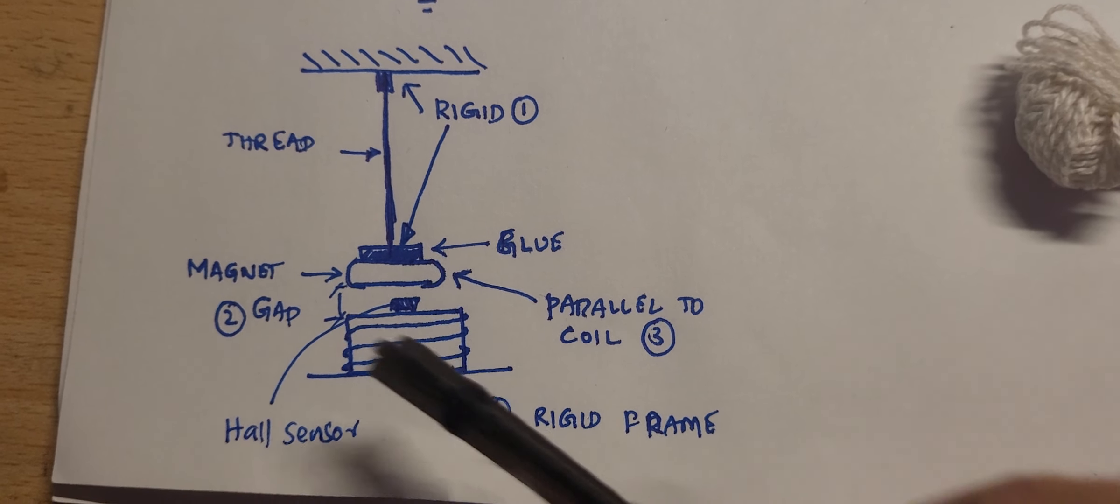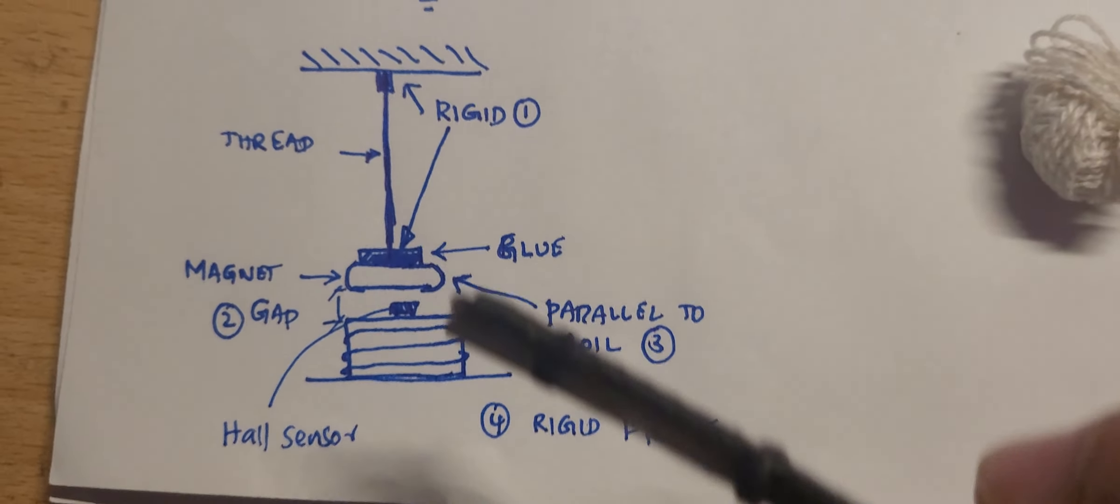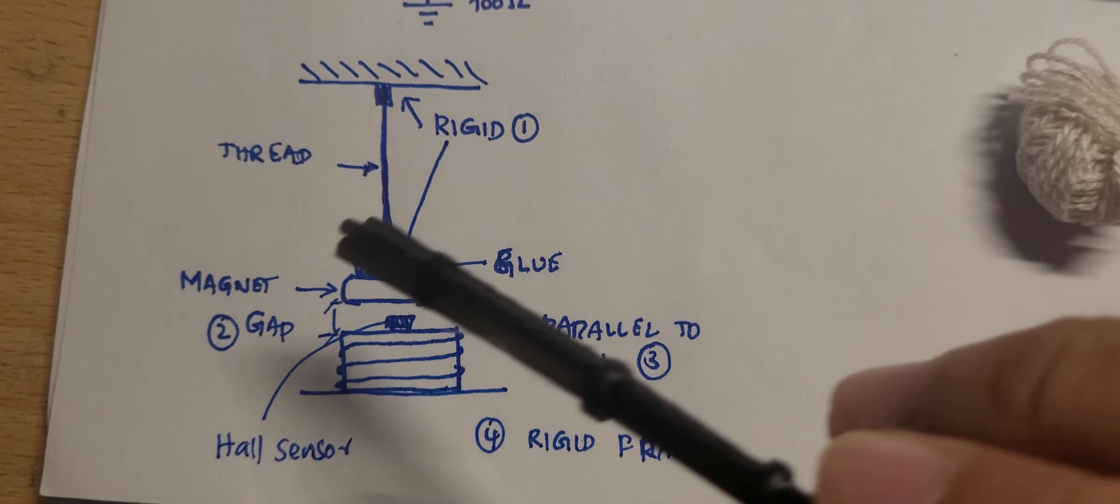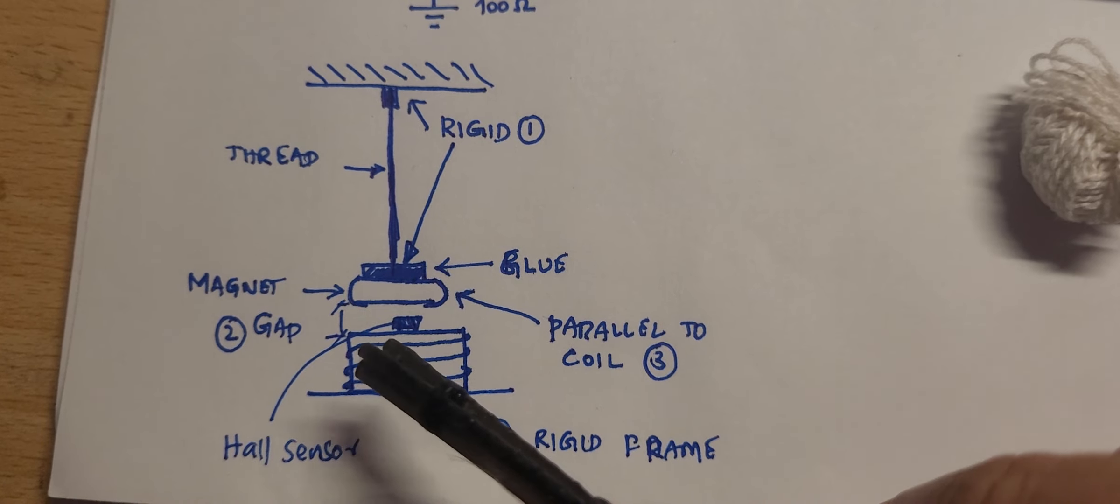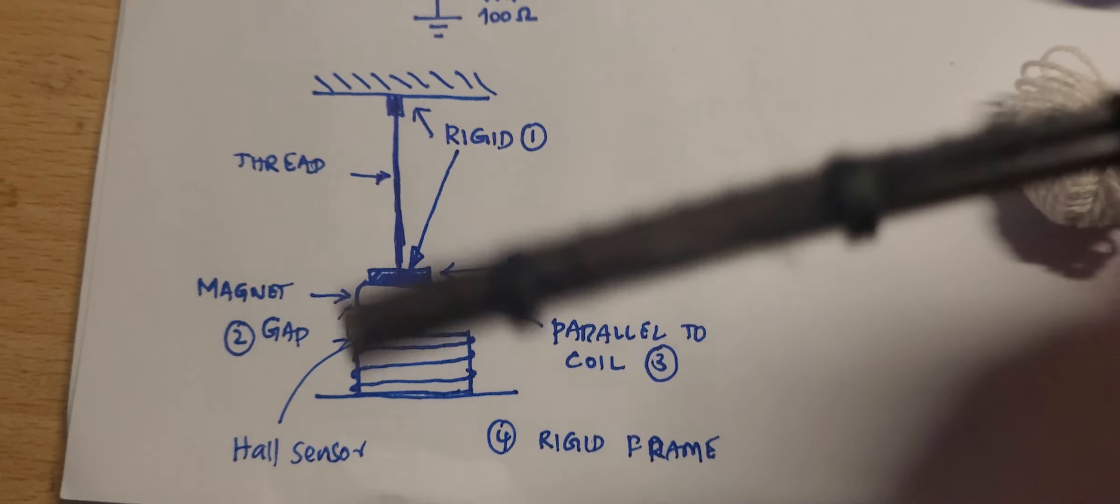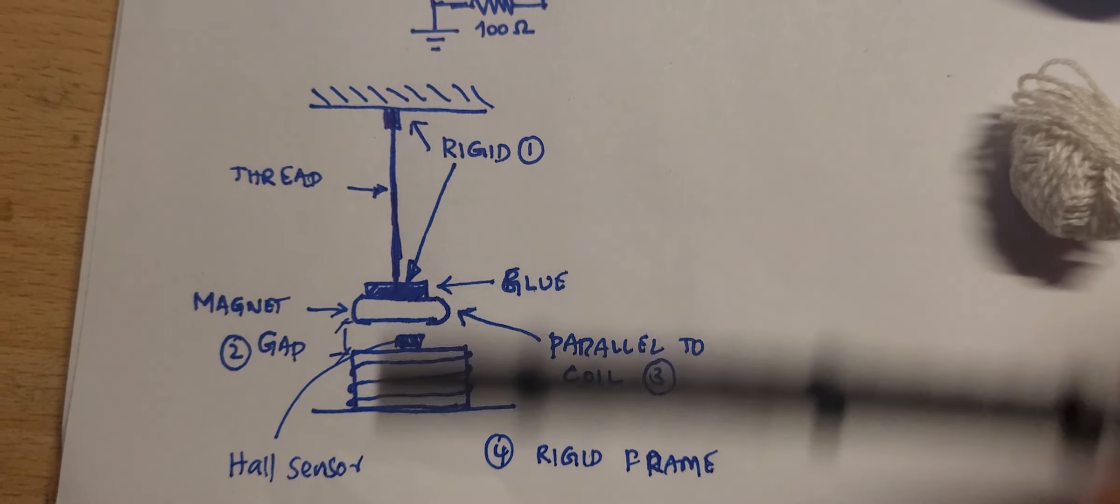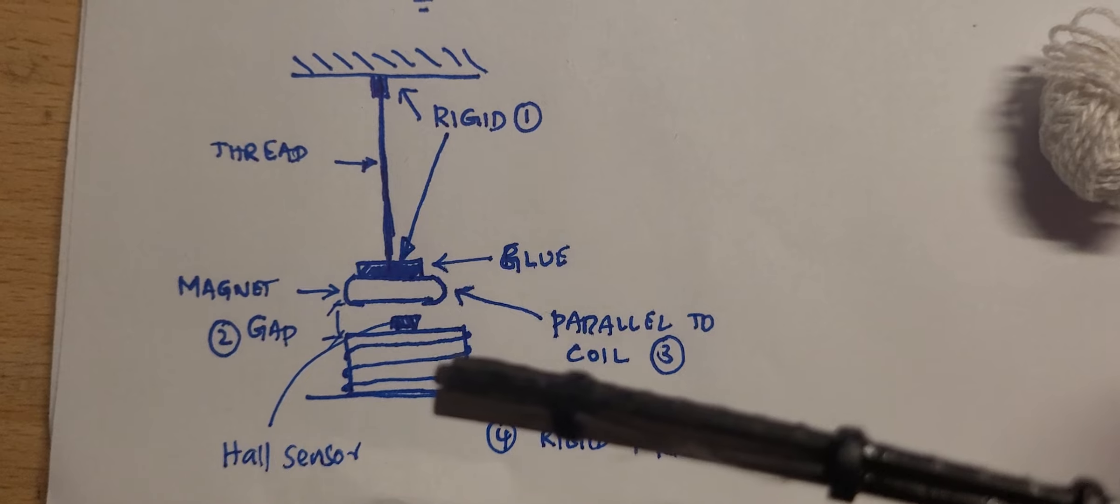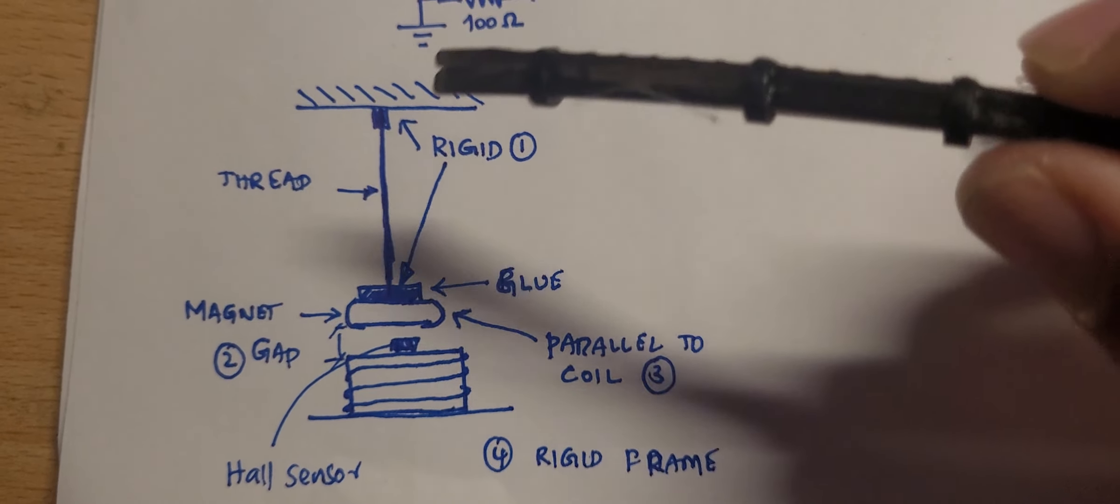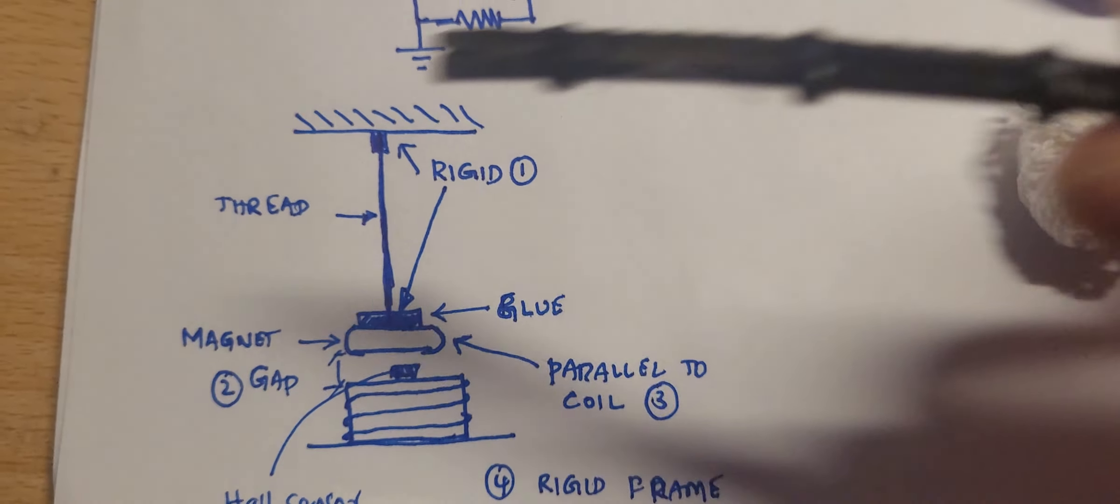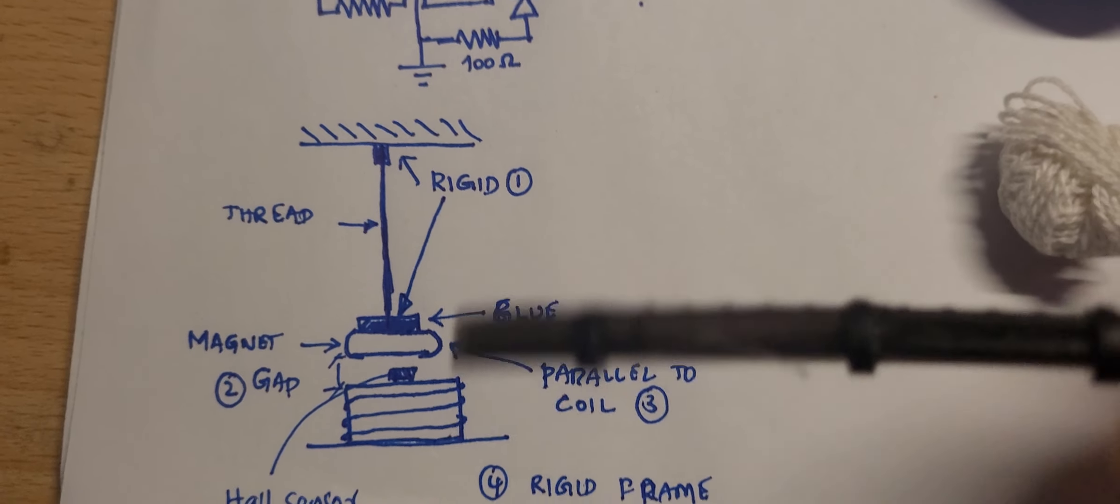This is irrespective of what kind of string you use here, whether rigid or flexible. And of course you have to make sure that this magnet is parallel to the coil. Otherwise you would have jittering motion, random motion in different directions because the field is not concentrated and not parallel to each other. What is also important in this case is this frame that is connected between the top where the string is held and the bottom where the coil has to be quite rigid.